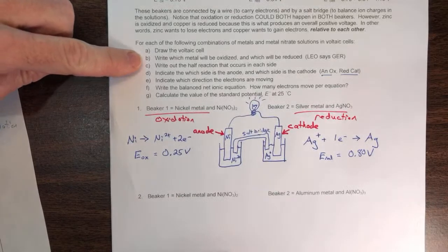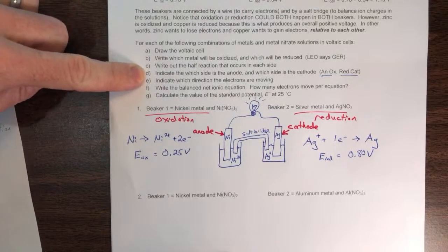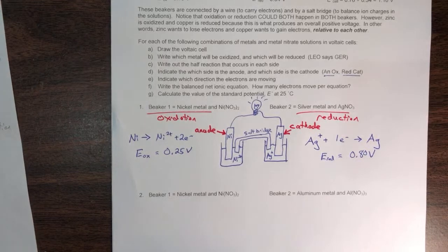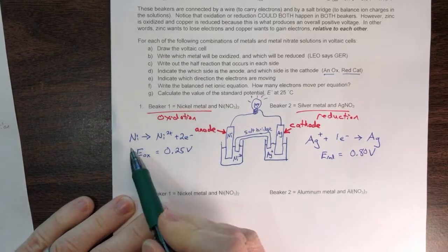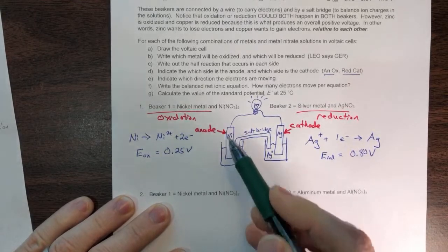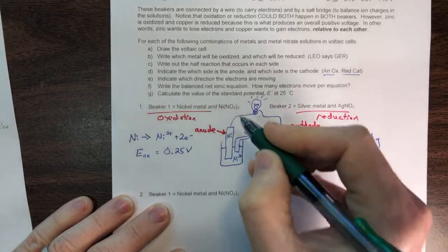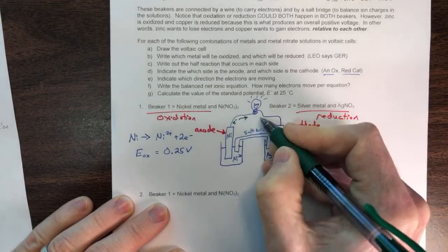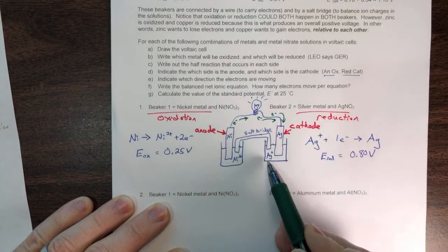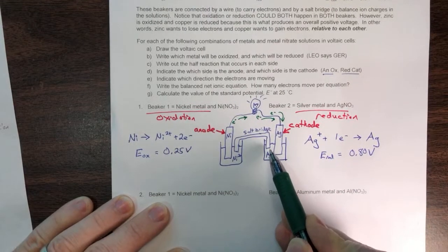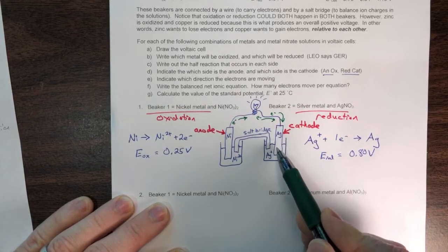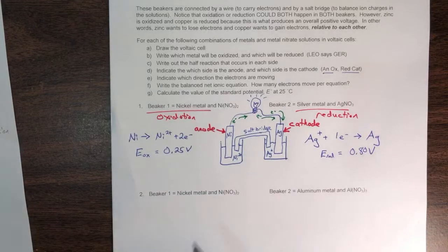The electrons are going to be moving always from the anode to the cathode. The nickel is losing electrons, so the electrons are literally coming from the nickel electrode. They're going to flow all the way over to where the silver is. The silver ions will literally flow through the solution until they touch the electrode and get an electron that came from nickel, turning into silver metal and coating the electrode with a greater amount of silver.